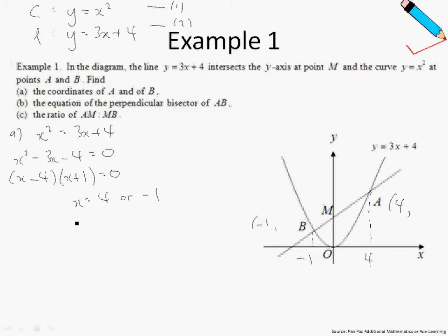Let me continue to solve for the corresponding values of y. y equals x squared as given by equation number one. So y is 16 or y is 1. Therefore, when x is negative 1, y is 1, so the coordinates of B are (negative 1, 1), and the coordinates of A are (4, 16), as you can see on the screen.